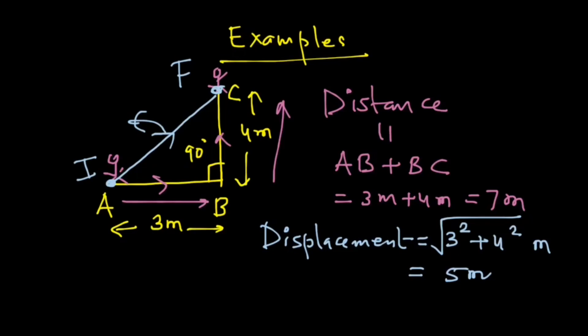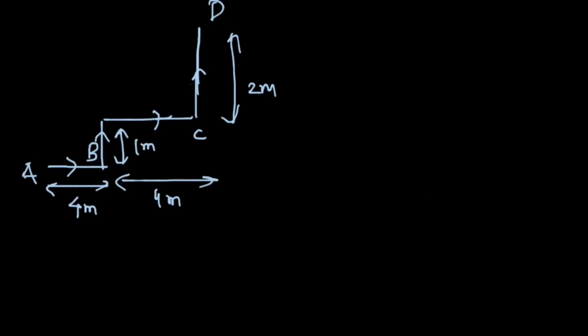Here is another example. This time the object is moving from A to B, then from B taking this stair sort of path to C, and then from C to D. And we need to find out the distance as well as the displacement. Once again, distance is equal to the total path length, and that is equal to AB plus BC plus CD. And you can see that AB is given to be 4 meters. Now from B to C you go 1 meter up and 4 meters forward, so that is 5 meters. And from C to D you move 2 more meters, and that gives us 5 to 7, 11 meters.